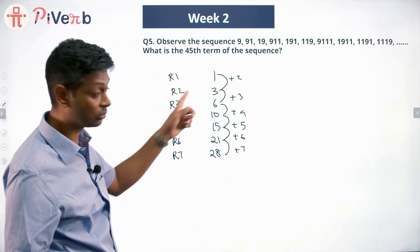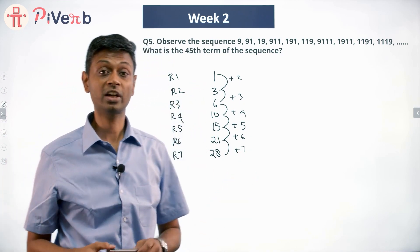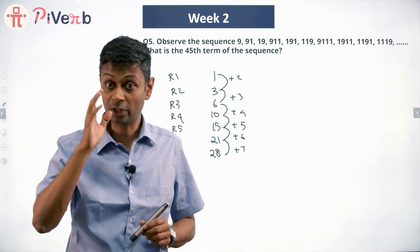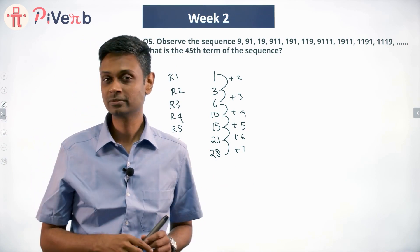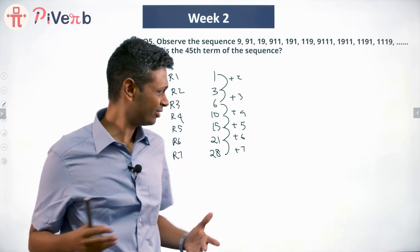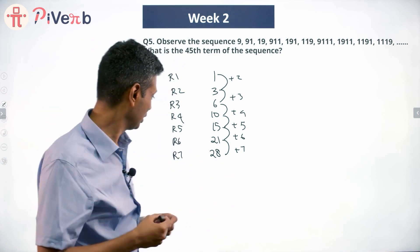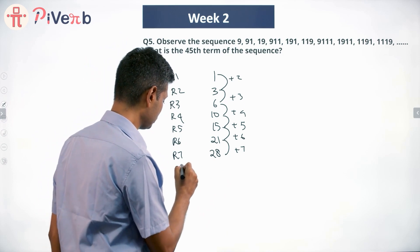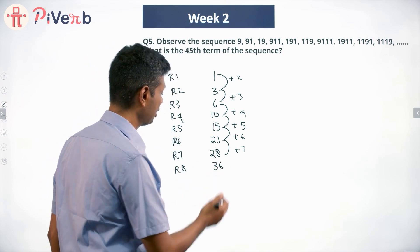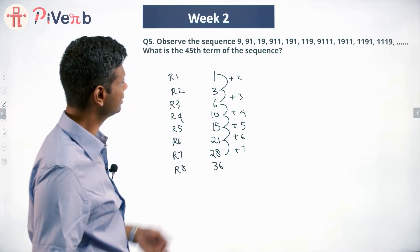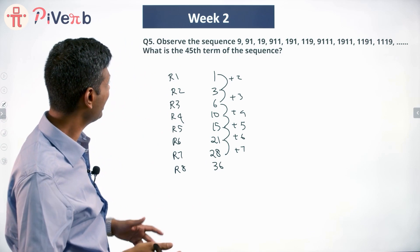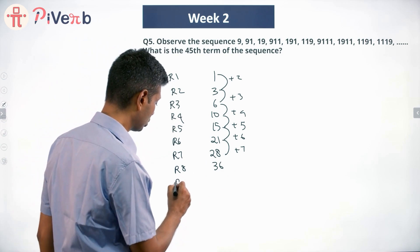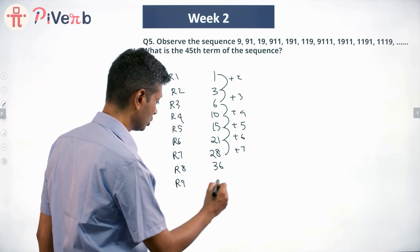These numbers — 1, 3, 6, 10, 15, 21, 28 — are called something special. I want you to find out what they are called. Row 8 ends at 36. Continuing this way, end of row 9 gives us 45. So row 9 ends with the 45th number.